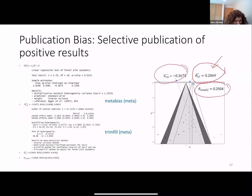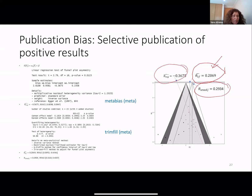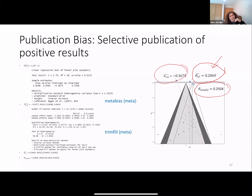The overall effect size estimates show confidence intervals without overlap with the adjusted overall effect size confidence interval, pointing to the existence of an overall effect size that is sensitive to publication bias in the published studies.